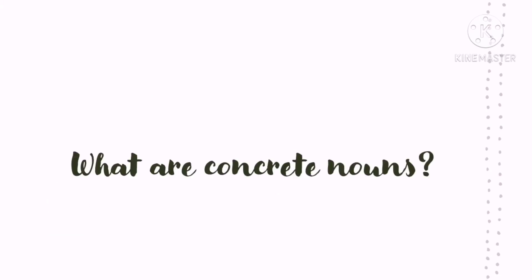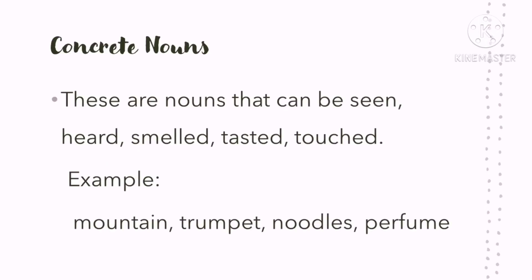Now let us first study what concrete nouns are. Concrete nouns are nouns that can be seen, heard, smelled, tasted, and touched. When we say concrete nouns, these are nouns wherein we can use our five senses — our sense of sight, sense of smell, sense of hearing, sense of taste, and sense of touch. Examples of concrete nouns include mountain, trumpet, noodles, and perfume.